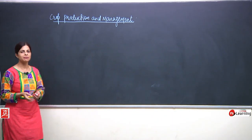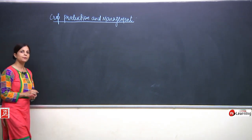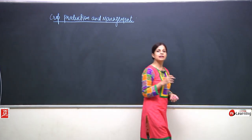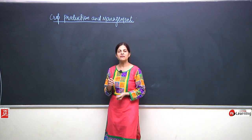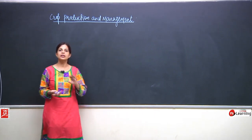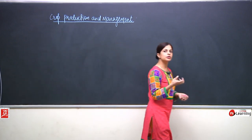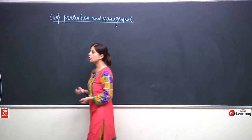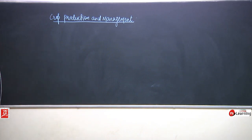The second question which comes in our mind is: why do we have to study this chapter? Our country is known as an agricultural country. Around 70 percent of our population is still directly or indirectly linked with agriculture. So we should know the different steps - how the crops and the food we eat, the grains we have at home, reach us.